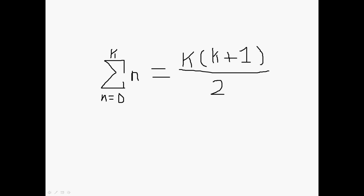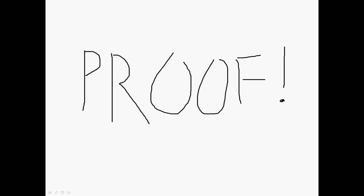So this is the sum as n goes from 0 to k — if you ever see this notation, that's how you figure it out. It's just a nice easy formula to know how it works. And this time I do have a proof.